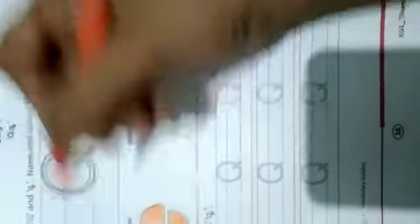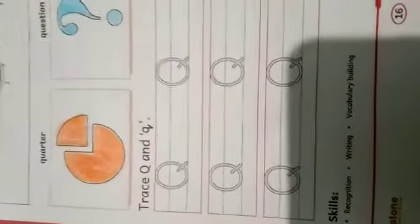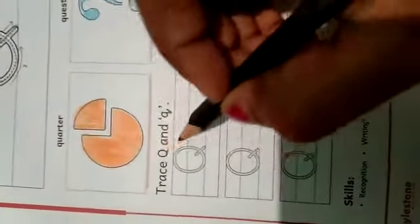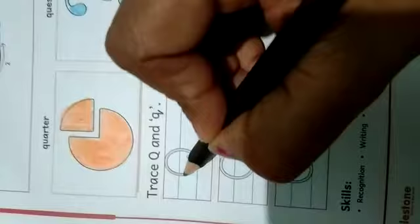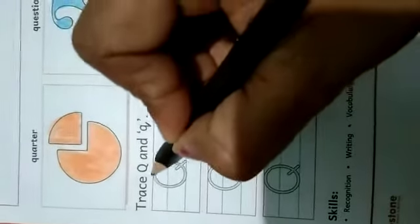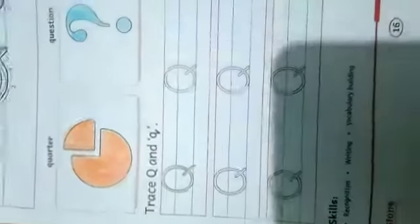After coloring this picture, what will we do? We will color these pictures. Let's color these pictures and after that come to the capital letter. How will we write? Again, we have 4 lines. We are going to write in 3 lines. Make a big circle and a small slant line down.